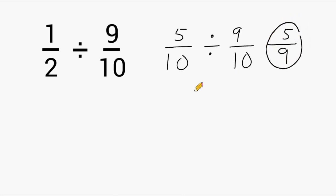1 half divided by 9 tenths is 5 ninths. Now let's do the keep change flip method just to verify that our answer should in fact be 5 ninths. So we're going to keep 1 half the same. We are going to change this into a multiplication sign and rewrite 9 tenths as 10 ninths. Now if we multiply our numerators together, that produces 10. The denominators produce 18.